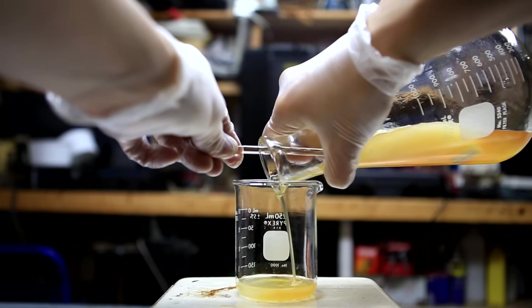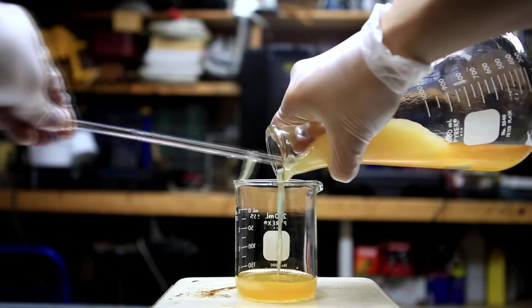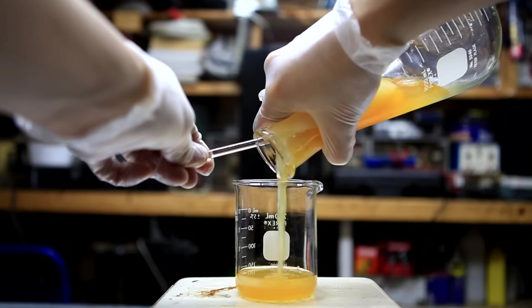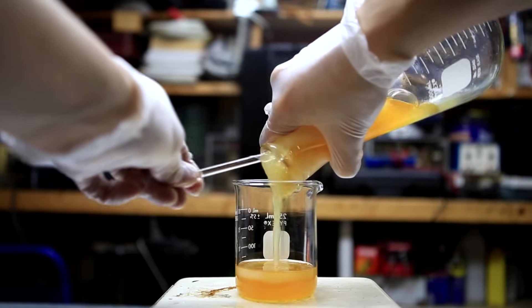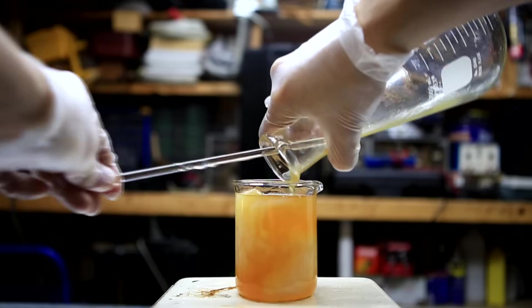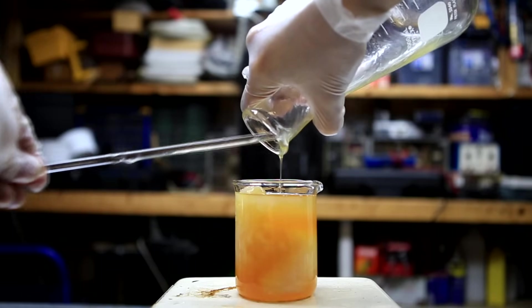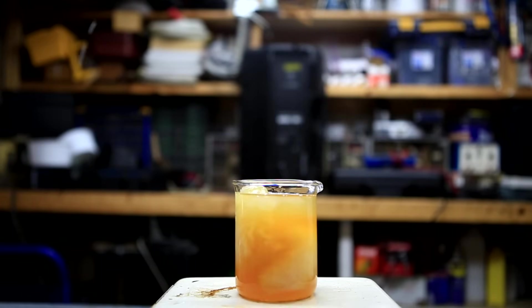To separate them, I added the entire mess to a beaker. Once it was in the beaker, it was stirred and the glycerin was allowed to settle at the bottom, and when the gelled biodiesel floated to the top, it was simply scooped off using the glass stir rod.